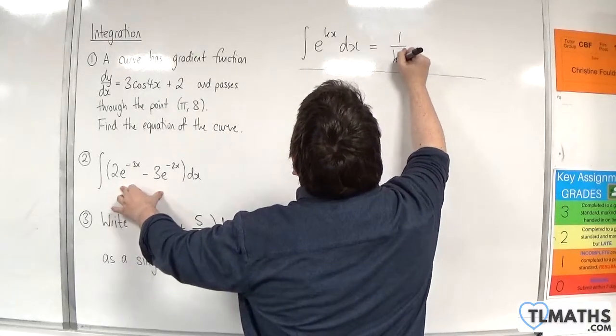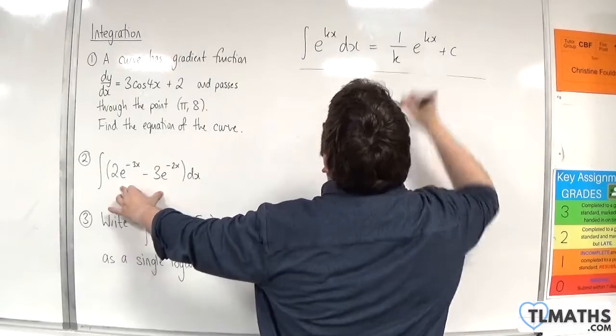So the rule for that is that we would have 1 over k e to the kx plus some constant c.